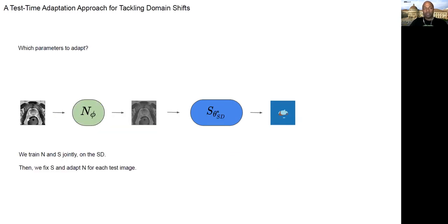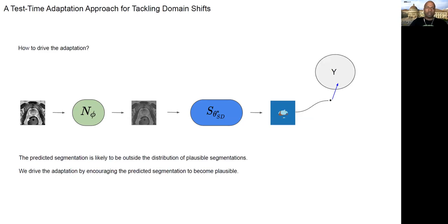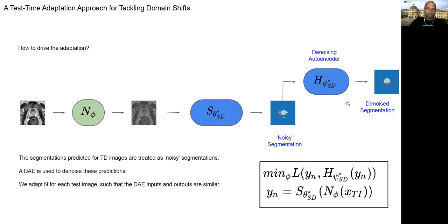And then the two questions: the first question is which parameters to adapt. And here we say that we introduce a small network in front of the segmentation network. And these are the parameters that we adapt for each test image. And the second question is how to drive this adaptation. And for this, we say the segmentation that you predict, it's outside the ball of good segmentation. So let's try to drive it inside the ball of good segmentations. And to quantify this ball of good segmentations, we use a denoising autoencoder. So we treat the predicted segmentation as a noisy segmentation, and we use the denoising autoencoder to denoise it. And then we say for each test image, adapt these normalization parameters, such that the input of the denoising autoencoder looks like the output of the denoising autoencoder. And this is our test time optimization loss.